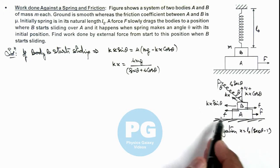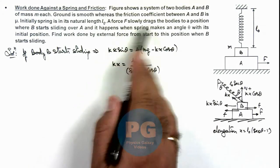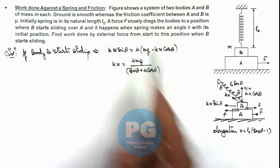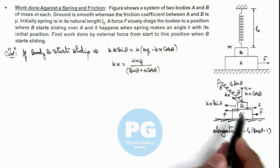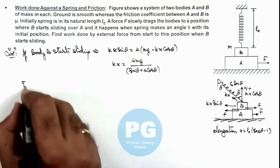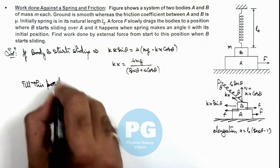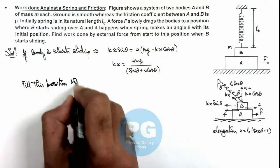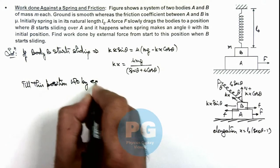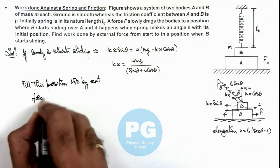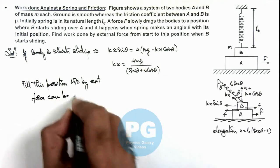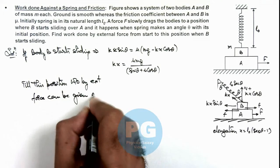And as it is slowly dragging, as we are given in the problem if it slowly drags, so no kinetic energy is gained by the block. So here we can write till this position, work done by external force can be given as the energy gained by the spring.